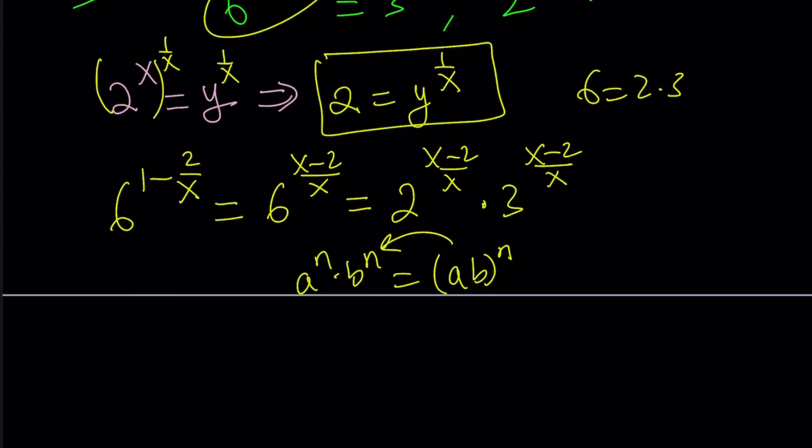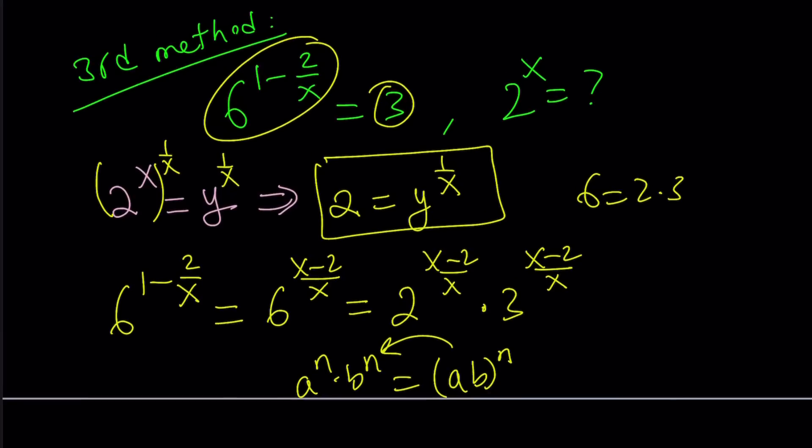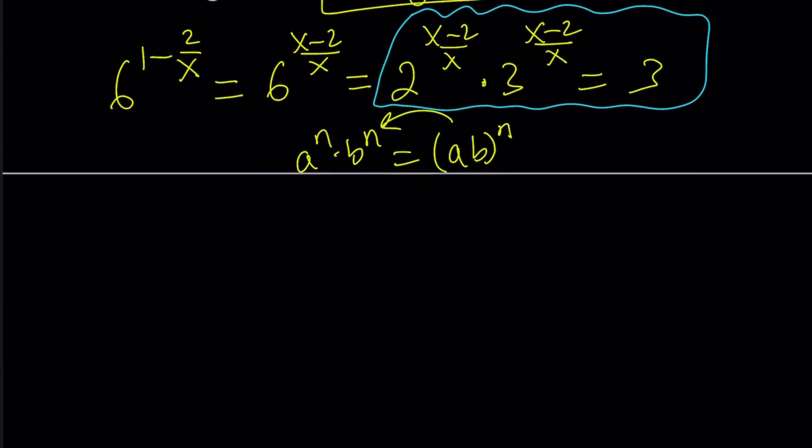Now 6 to the power 1 minus 2 over x is equal to 3. We know that. It's given. So this is equal to 3. So that is the critical part. We're going to take this. And guess what? We're going to put the 3's on the same side because they can be combined.